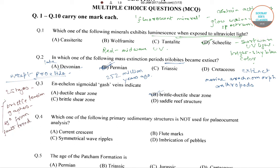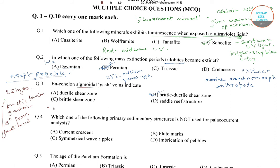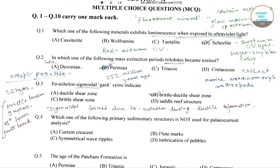This is the first stage. In the next stage, these sigmoidal shapes are formed due to rotation during ductile deformation. So in the second stage, these sigmoidal structures are formed due to rotation during ductile deformation.